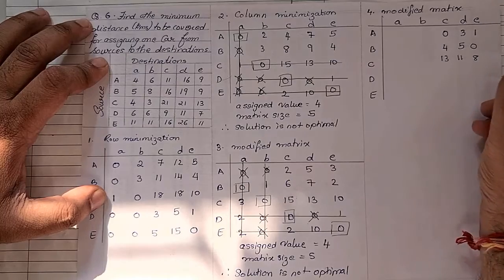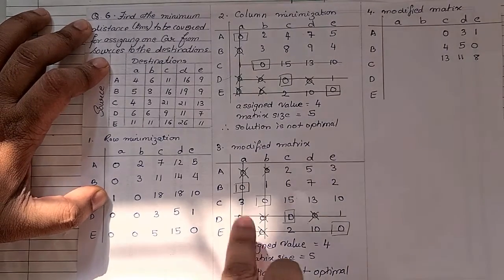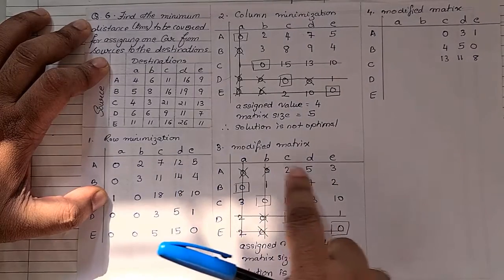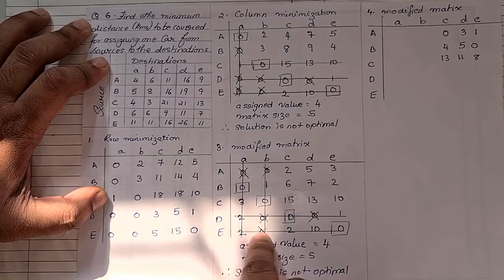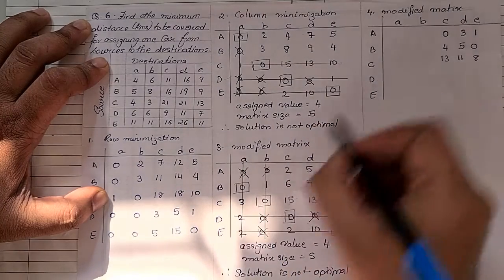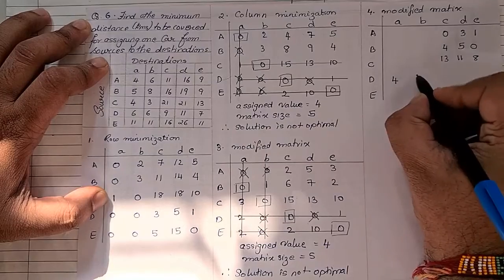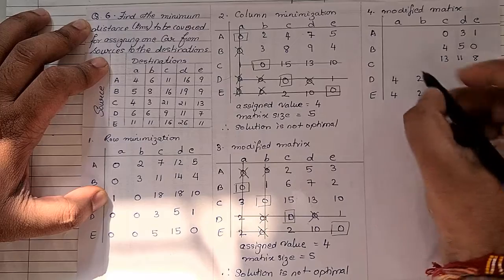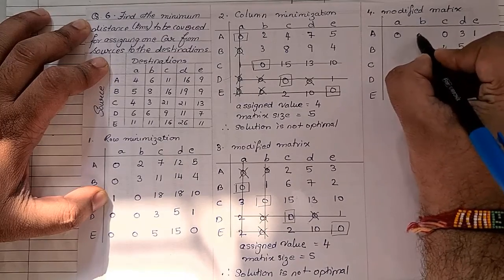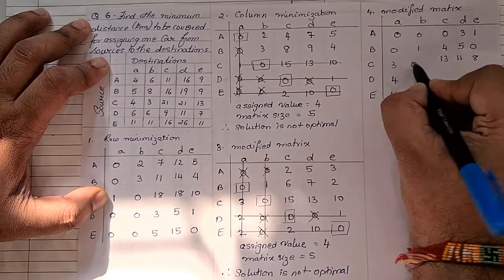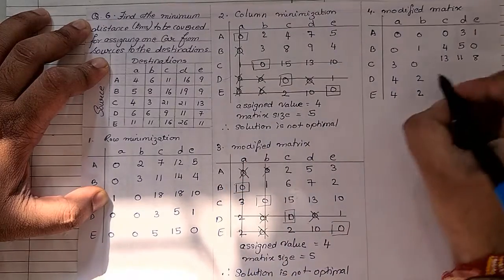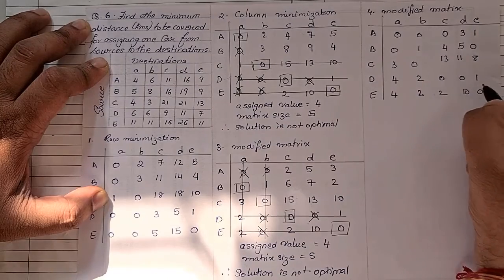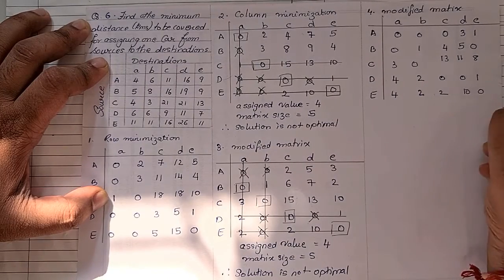Wherever the lines are intersecting, those points get added by two — the lowest value from the unmarked section. So two plus two becomes four, zero plus two becomes two, two plus two becomes four, and zero plus two becomes two. The rest of the values remain as they are: zero, zero, zero, one, three, zero, zero, zero, one, two, ten, and zero.